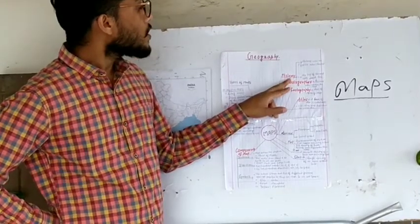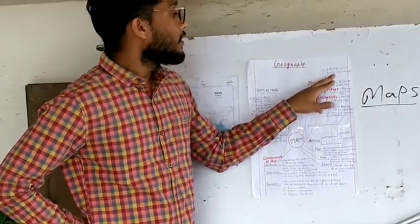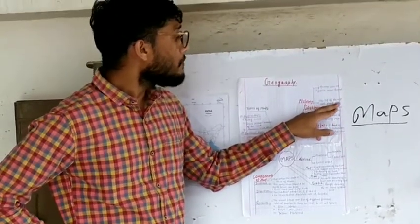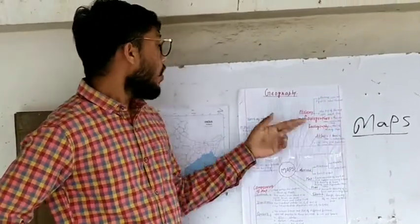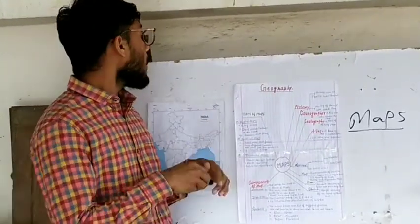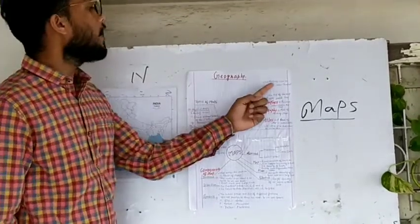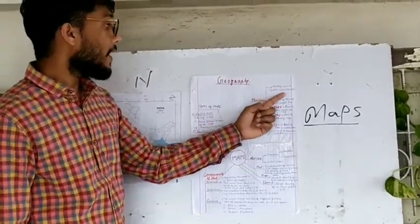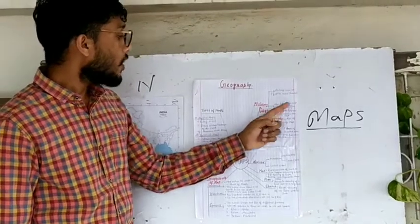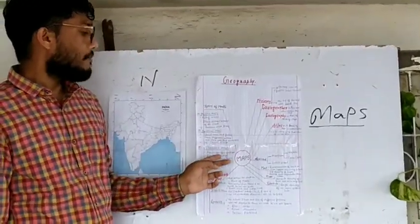Ptolemy was an Egyptian who established that the top of the map is shown by the north line. So the top of the map always indicates north, and this convention was given by Ptolemy.